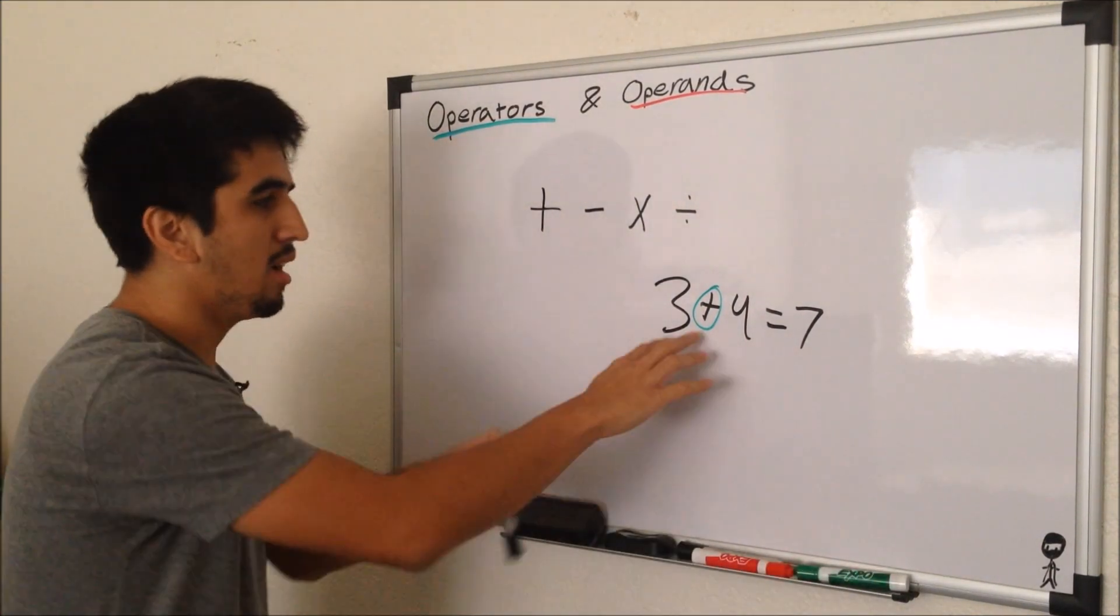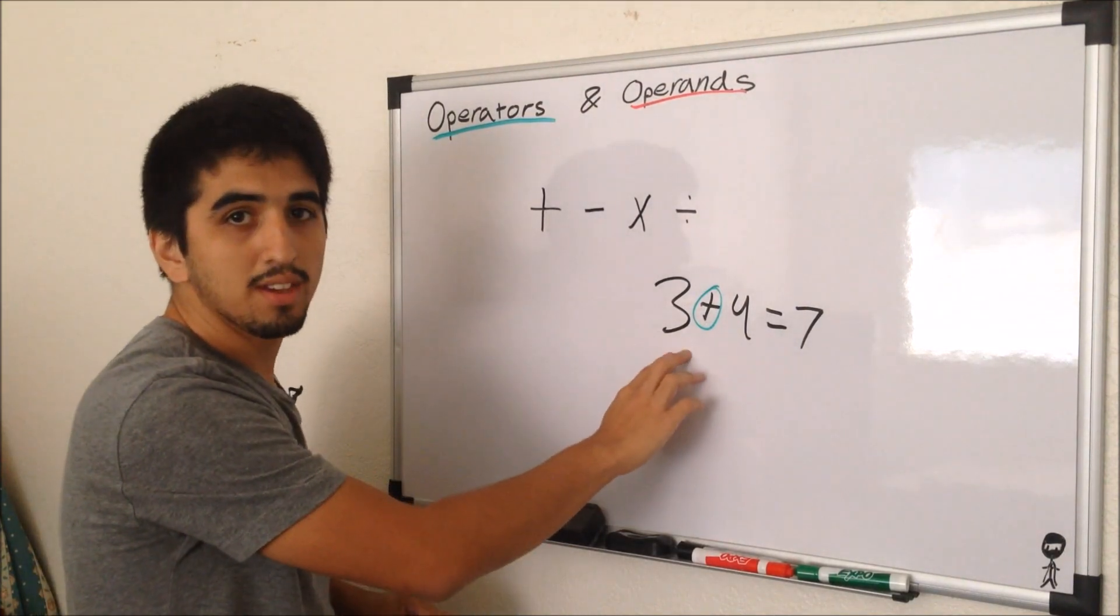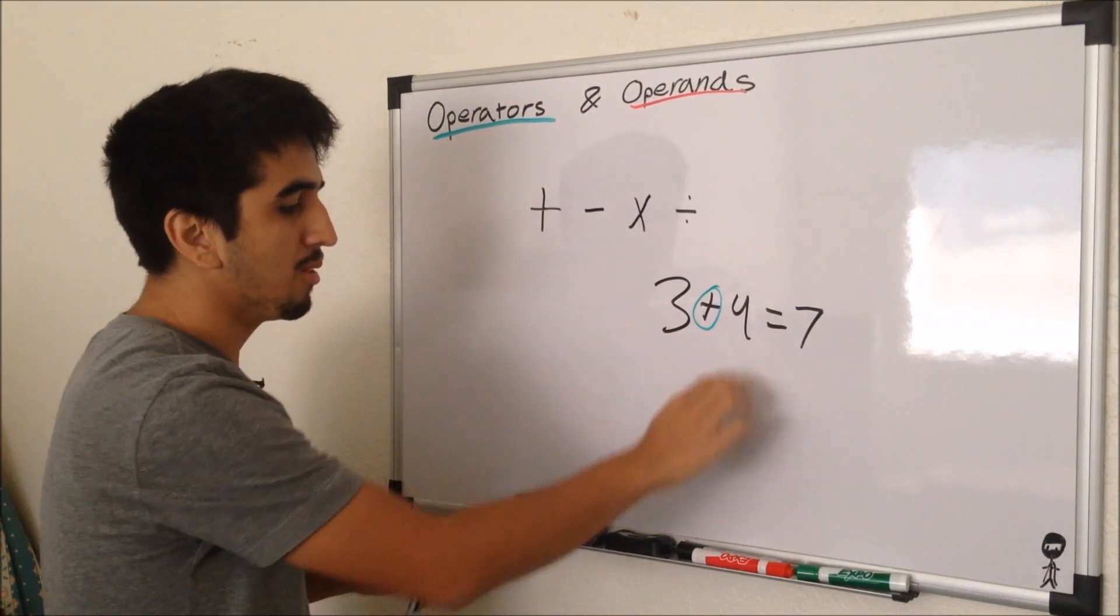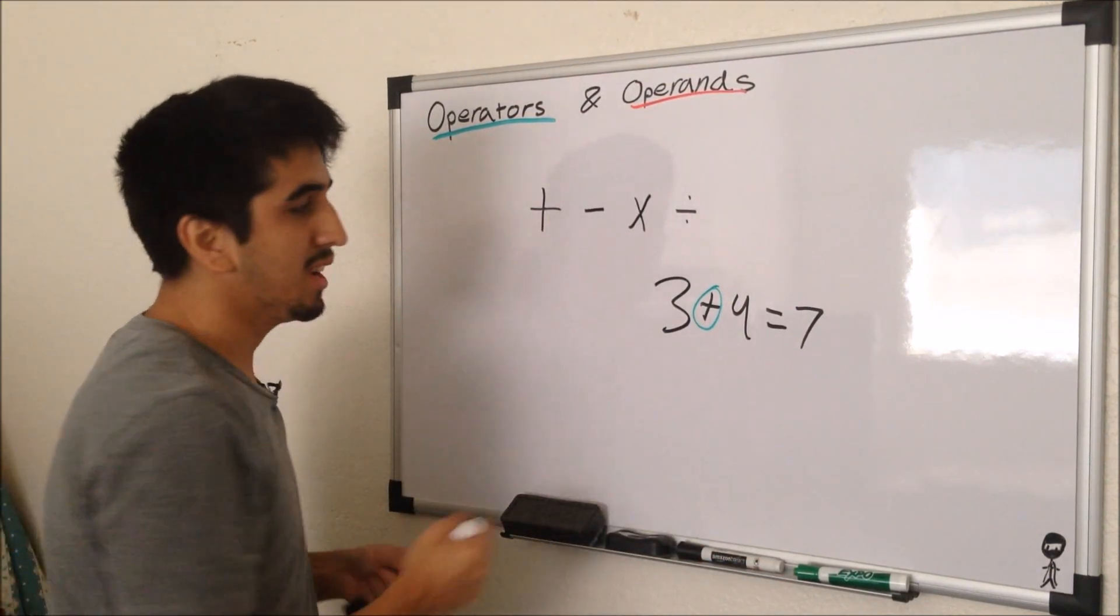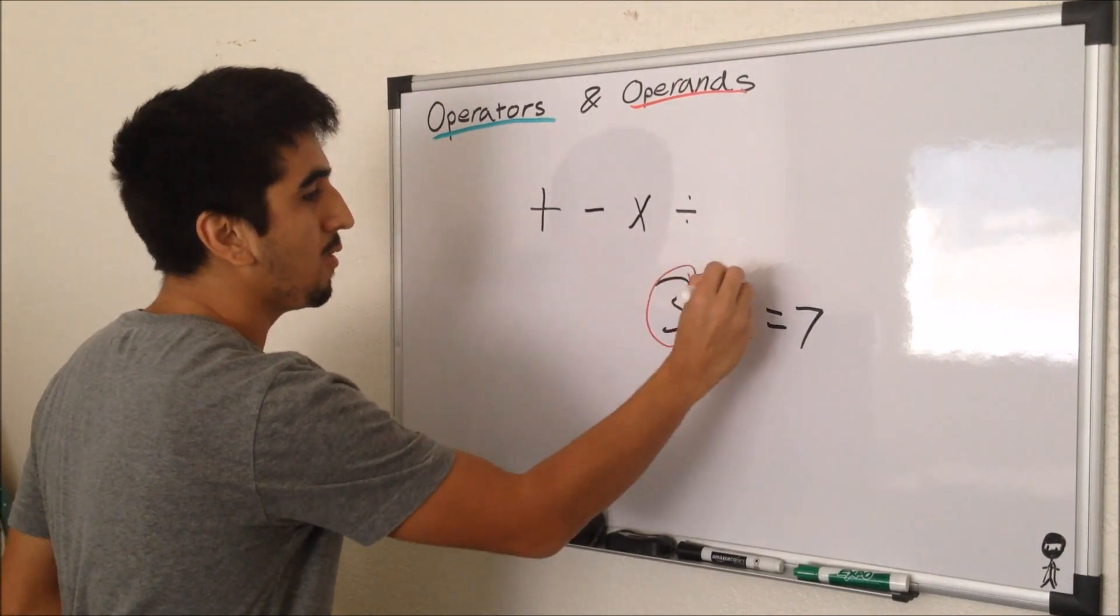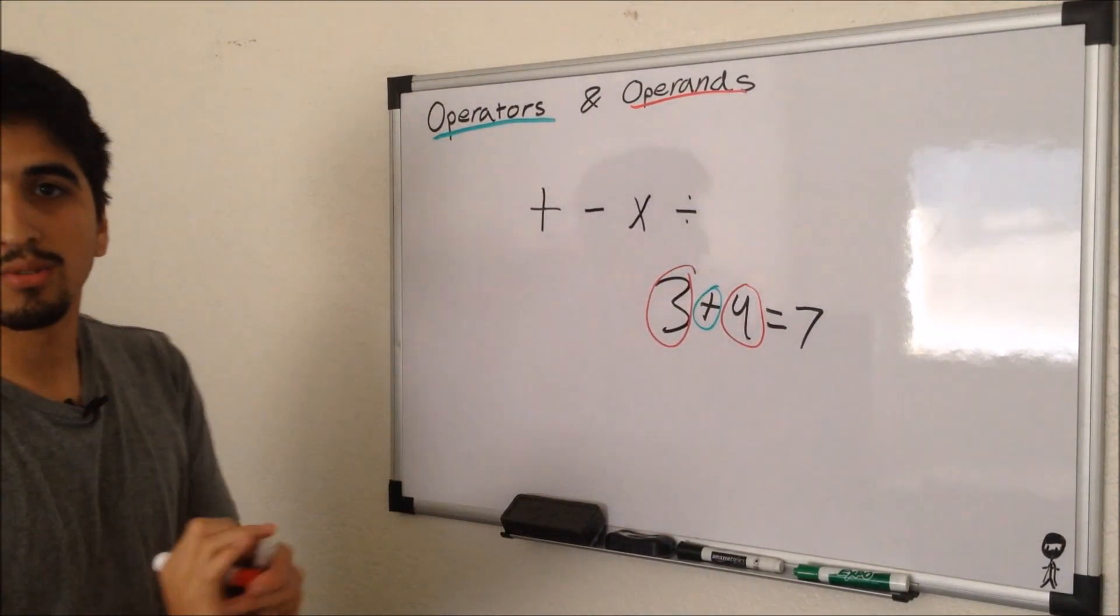What is that operator being done to? It is being done to the 3 and the 4. We are adding the 3 and the 4, therefore our 3 and our 4 are both operands, giving us a total number of 7.